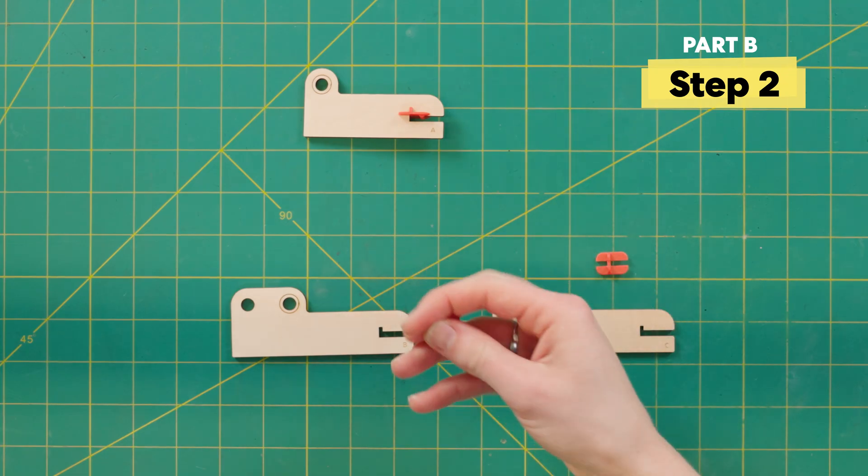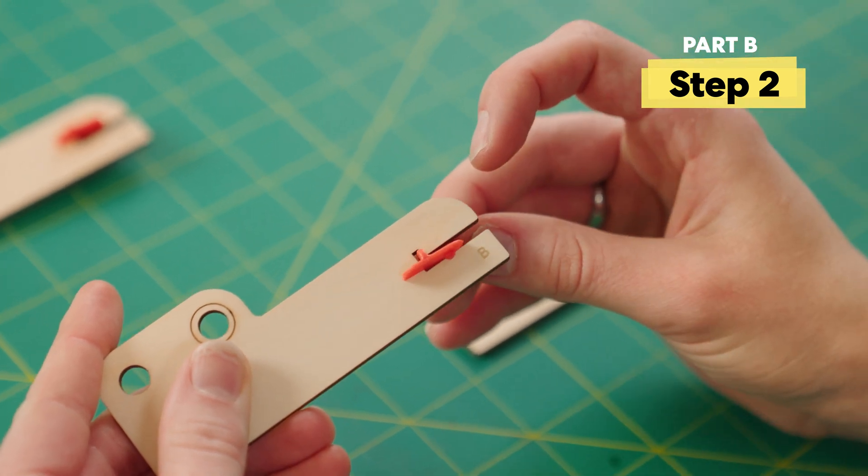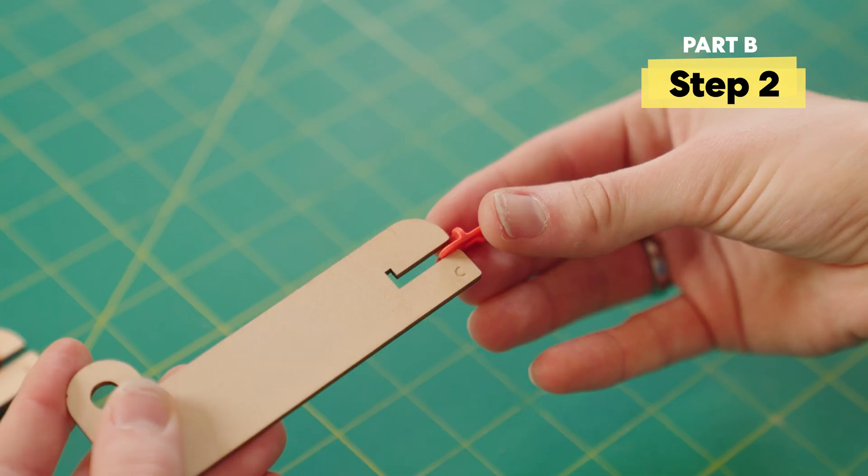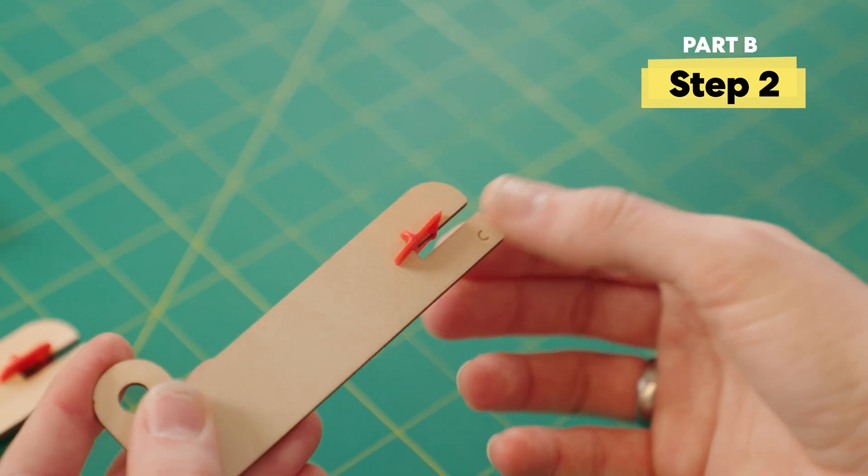Then repeat these steps for the wood that says B and the wood that says C. Make sure to double check that everything's in the correct orientation. It should sit nice and flush.